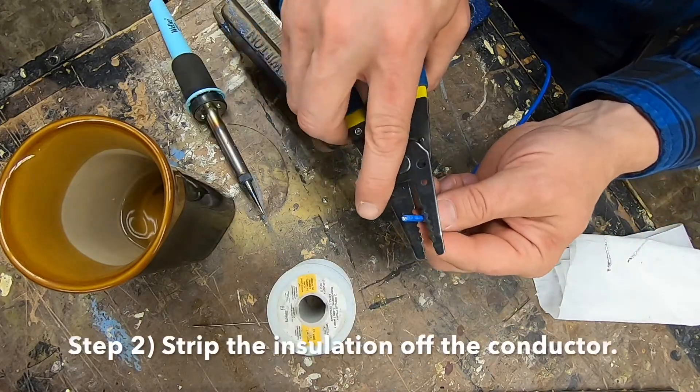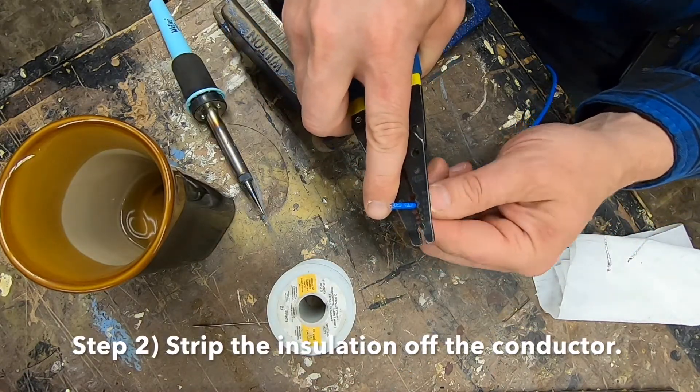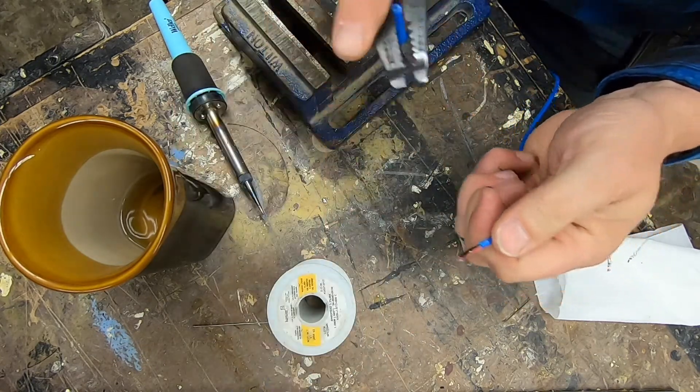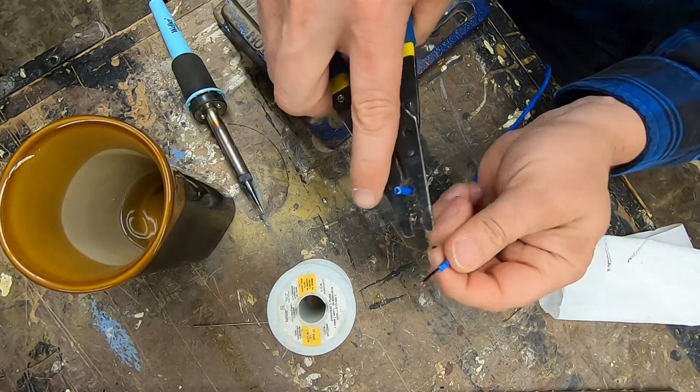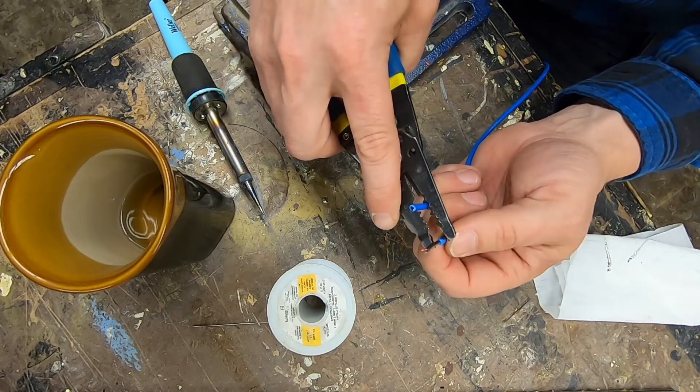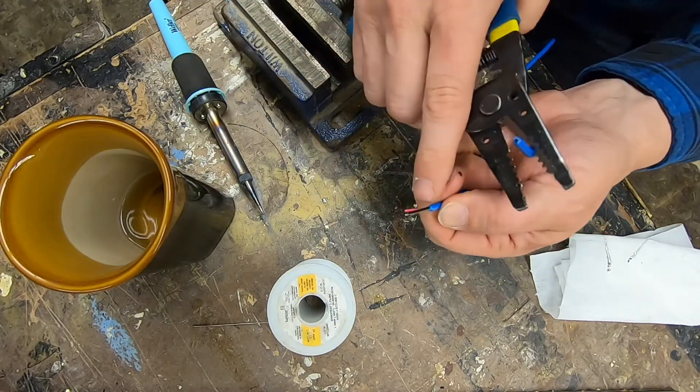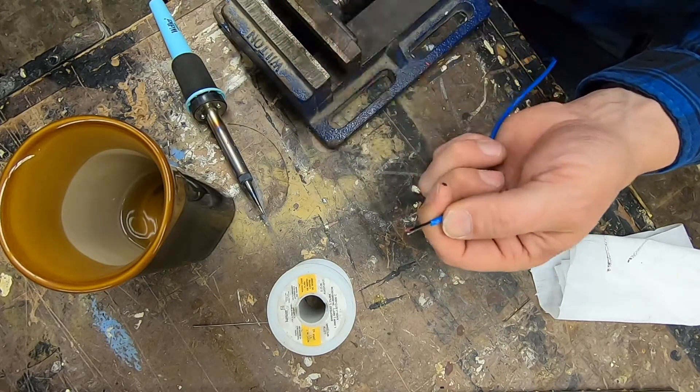I'm going to take off about a half inch of this outside jacket. I'm using the number 12 gauge notch on these wire strippers and I'm just cutting halfway, rotating and then cutting halfway through, and then I will use the cutters to actually pull that tab off, taking care not to cut into that interior insulation.